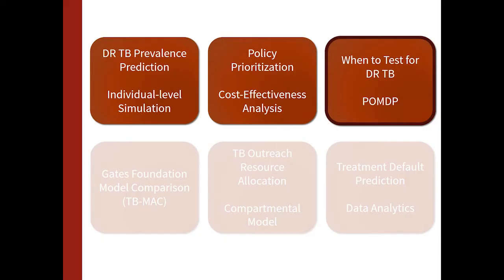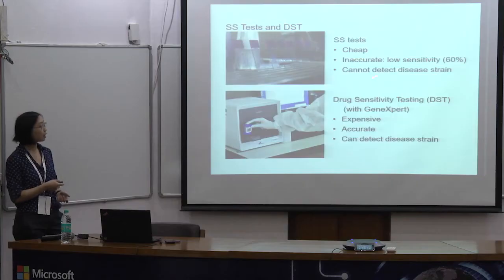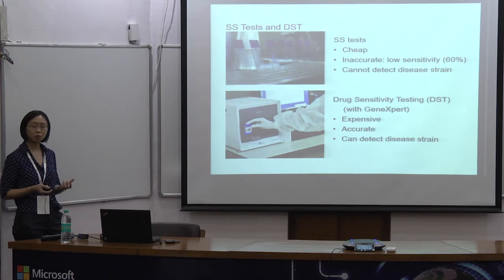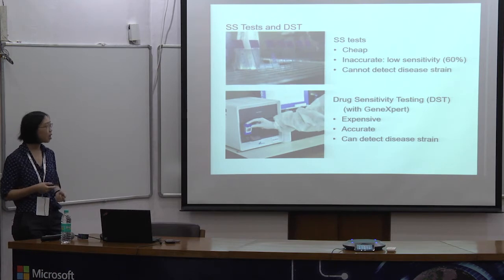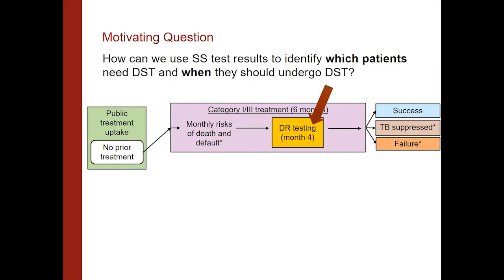The last problem I want to touch on is when to test for drug-resistant tuberculosis, solved using a POMDP model. Two tests are used in first-line therapy: sputum smear tests, which are very cheap but inaccurate, with very low sensitivity and inability to detect the disease strain — giving a noisy estimate of whether a patient has TB. Drug sensitivity testing, or DST, using the expensive new GeneXpert systems, is very accurate and can detect the disease strain. The question was how to use the noisy test to identify which patients need DST and when, so we can triage high-risk patients into appropriate second-line therapy.